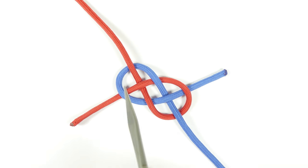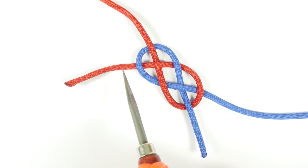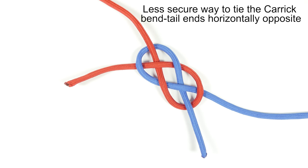When tying the Carrick Bend, it is optimal to have the two tail ends diagonally opposite to each other. This is much more secure than if you had the two tail ends on the same side. Here you can see a less secure version of the Carrick Bend, which has the two tail ends on the same side.